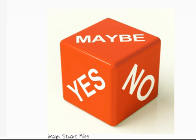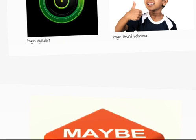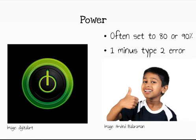There are three key numbers. Number 1 is the power, which is the probability of finding a true difference. This is the bottom right cell in our previous table, and is 1 minus the type 2 error. We want a large power to avoid type 2 errors, and so we normally use 80 or 90%.